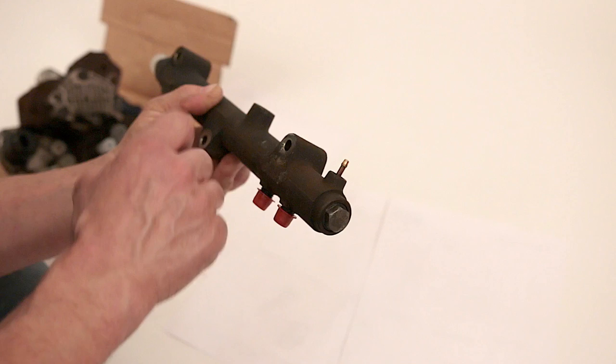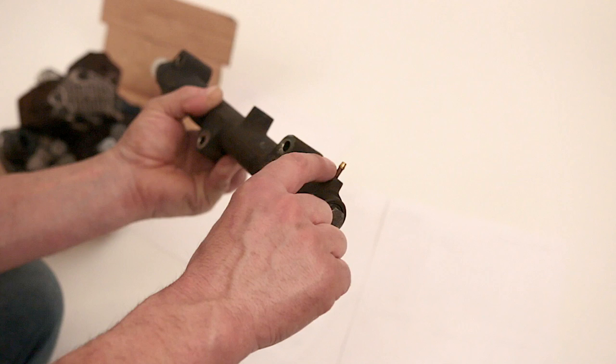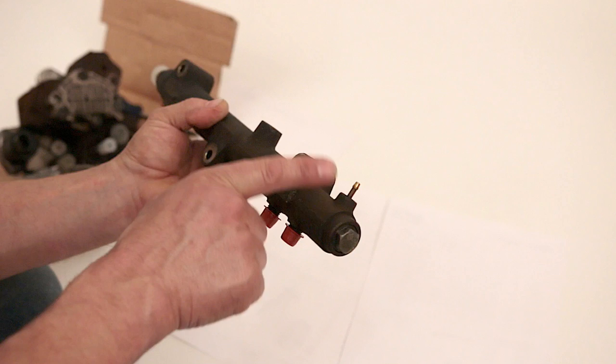Now because this van I had wouldn't even run, if I pulled the pipe off here and I just cranked the engine over, there was fuel coming out of this pipe. Now there should not be any fuel coming out of this pipe.